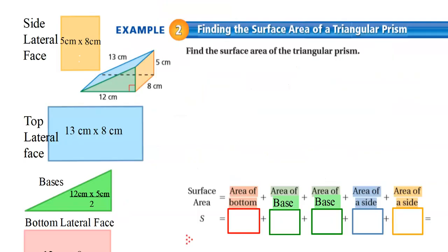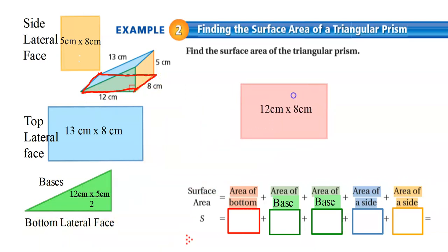Let's look at an example from your textbook — we're going to find the surface area of a triangular prism. I have it broken down: first, we'll find the area of the bottom. When I look at the shape, it's not sitting on the triangle, so I'll outline the bottom in red. Once I drew that picture, I can see the dimensions of the bottom: it's 12 across for the length and 8 for the width, so the bottom rectangle is 12 by 8.